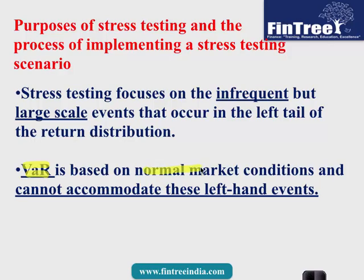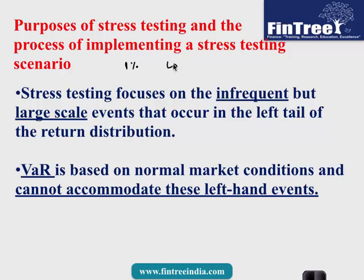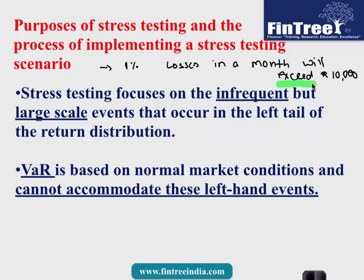Value at Risk is based on normal market conditions because it inherently assumes normal distribution and cannot accommodate these left-hand tail events. What VaR will tell you is, for example, there is a 1% chance that your losses in a month will exceed $10,000. But what VaR will not tell you — and the important word here is 'exceed' — is how much the loss could actually be beyond that threshold. After $10,000 it could be $15,000, $20,000, or even $100,000 or $500,000.